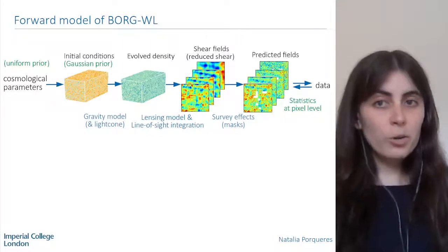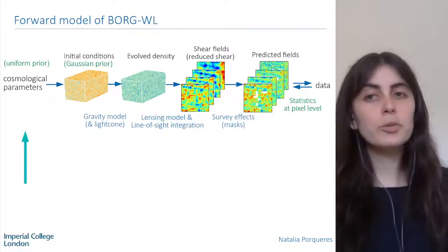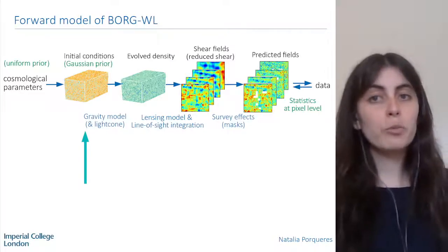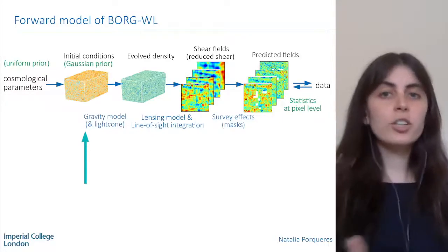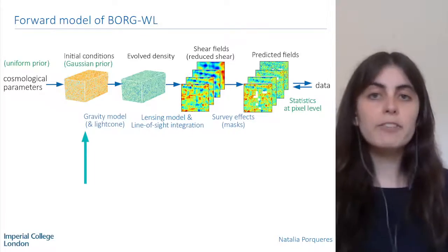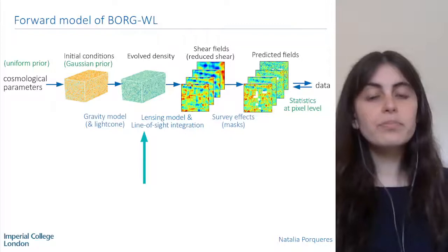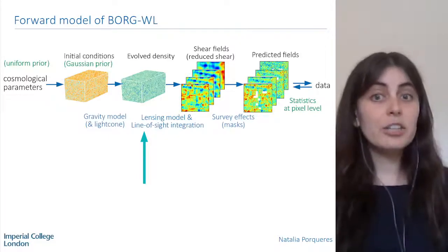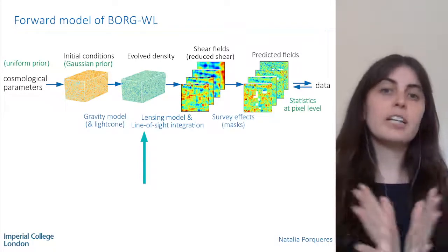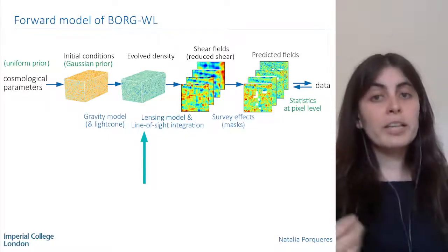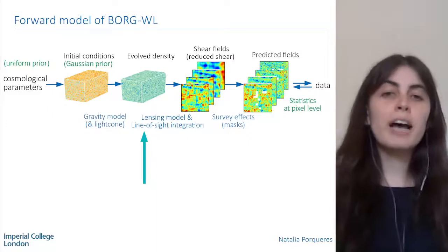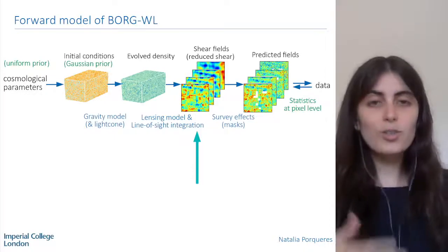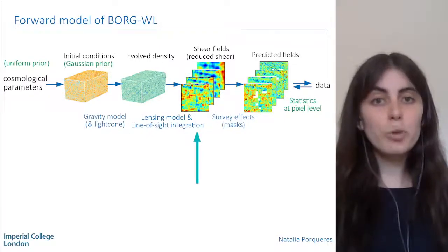This is how Borg for lensing looks. We start by sampling the cosmological parameters using a uniform prior, then build a box of initial conditions using a Gaussian prior, since we know the initial conditions are Gaussian. We evolve these initial conditions in time using the gravity model, which also accounts for light-cone effects, giving us the evolved dark matter distribution. We then integrate along the line of sight and apply the lensing model using a ray tracer to generate a cone of observations, obtaining the convergence field and from there the shear fields. This means we have access to both the convergence and the shear and can directly work at the level of the reduced shear, which is what we actually observe.